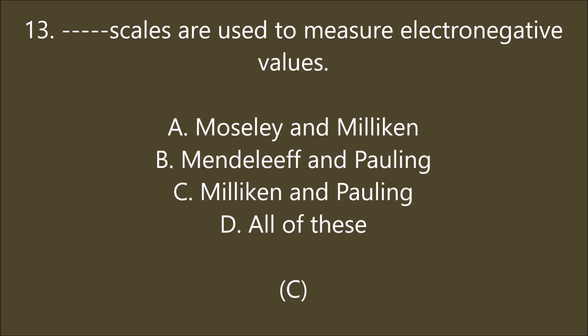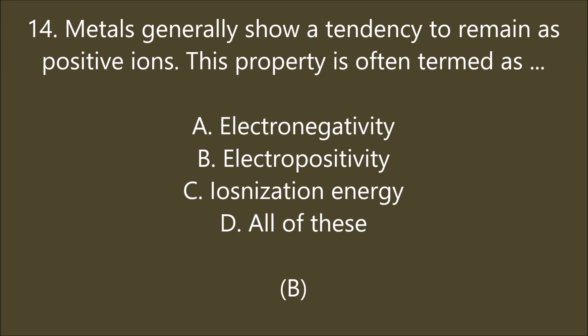___ scales are used to measure electronegativity values. Options: Moseley and Mulliken, Mendeleev and Pauling, Mulliken and Pauling, or all of these. C is the right answer — Mulliken and Pauling scales are used to measure electronegativity values. Metals generally show a tendency to remain as positive ions. This property is termed: electronegativity, electropositivity, ionization energy, or all of these. B is the right answer — electropositivity. Electropositivity in groups increases from top to bottom, whereas in a period it decreases from left to right.